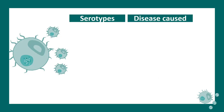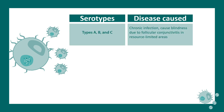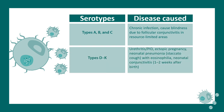To summarize the serotypes and diseases: serotypes A, B, and C cause chronic inflammation leading to blindness due to follicular conjunctivitis, primarily in resource-limited, low-income countries. Serotypes D through K generally lead to urethritis, pelvic inflammatory disease, and ectopic pregnancy, and can be transmitted from mother to baby during delivery.